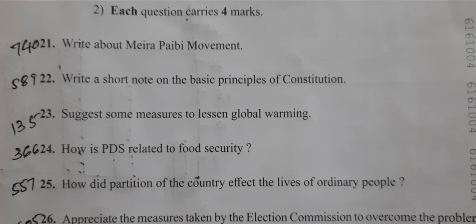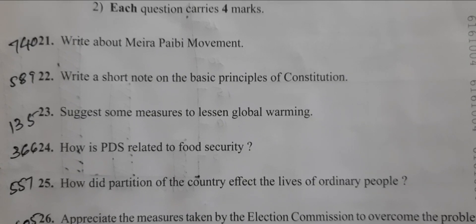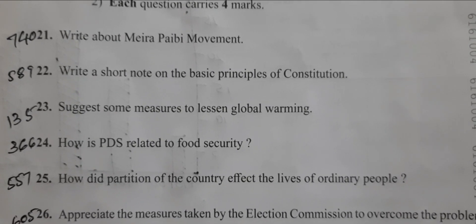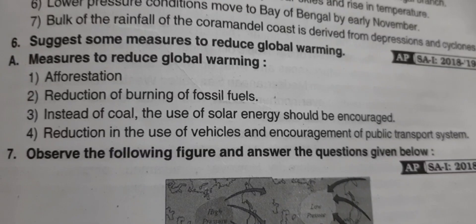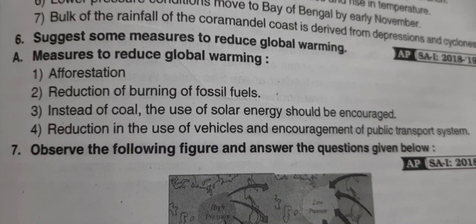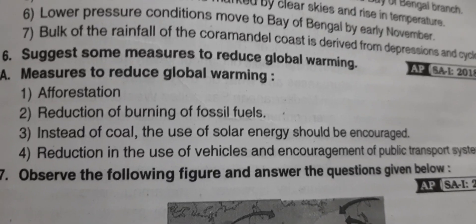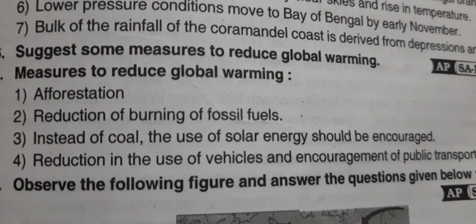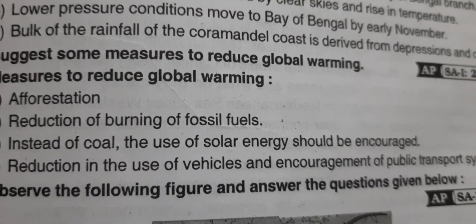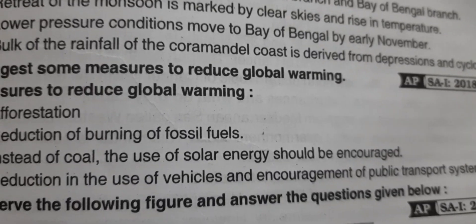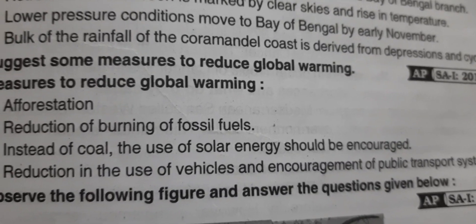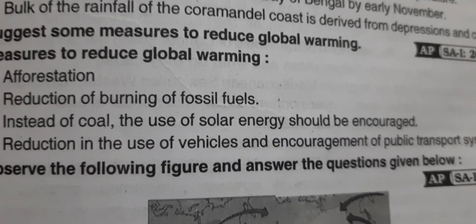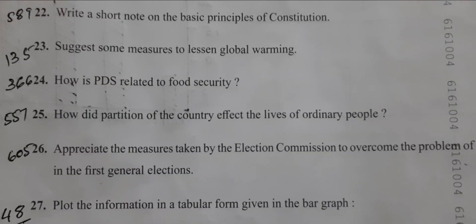Question: Suggest some measures to lessen global warming. Measures to reduce global warming include afforestation, reduction of burning of fossil fuels, using solar energy instead of coal, and reduction in the use of vehicles with encouragement of the public transport system.